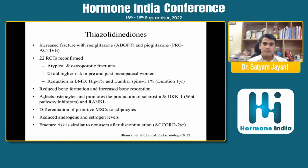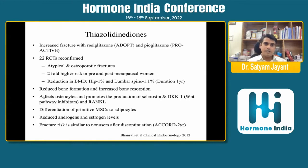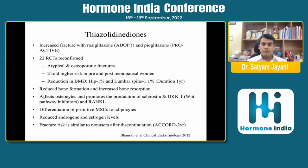Glitazones' fracture risk has been evident from the ADOPT study with rosiglitazone and the PROactive study with pioglitazone. Twenty-two RCTs confirm increased atypical and osteoporotic fracture risk, with a higher risk in pre- and post-menopausal women. Reduction in BMD at the hip is 1 percent and lumbar spine 1.1 percent after one year of glitazone use.